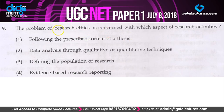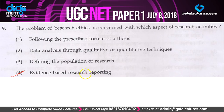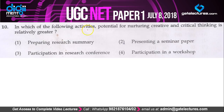Question 9: the problem of research ethics is concerned with which aspect of research activities? Research ethics means there are some ethics to follow in research. Out of the given options — following the prescribed format of a thesis, data analysis, defining population — these are not going to come in the way of research ethics. But evidence-based research reporting is concerned with research ethics, because the evidence requires conducting research or experiments on a particular population. So the answer is option 4.